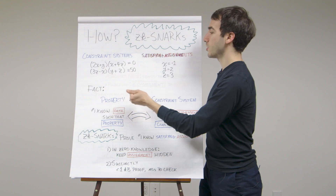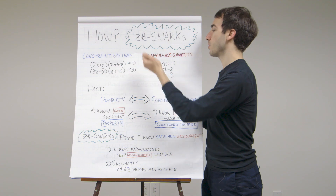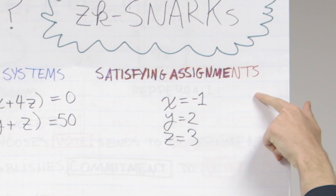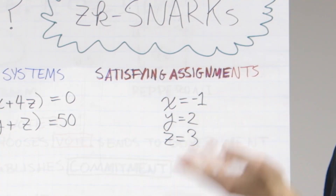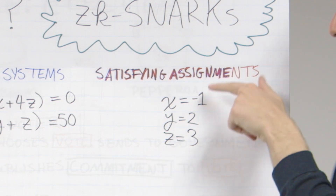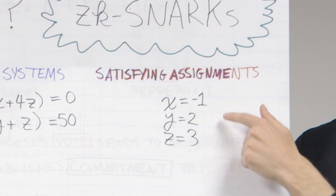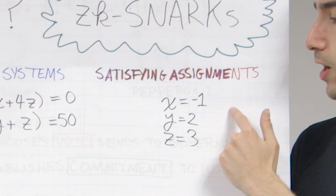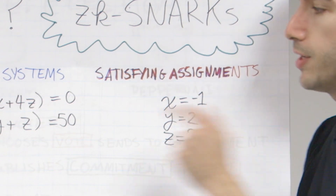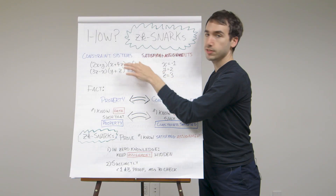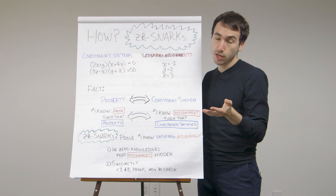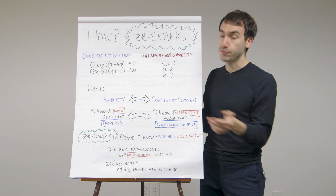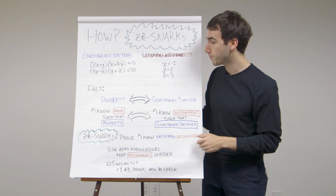A partner concept to a constraint system is that of a satisfying assignment. A satisfying assignment is just an assignment of values to each of the variables in the system so that each constraint is satisfied — in other words, the equation is true if you plug in those values for the variables.